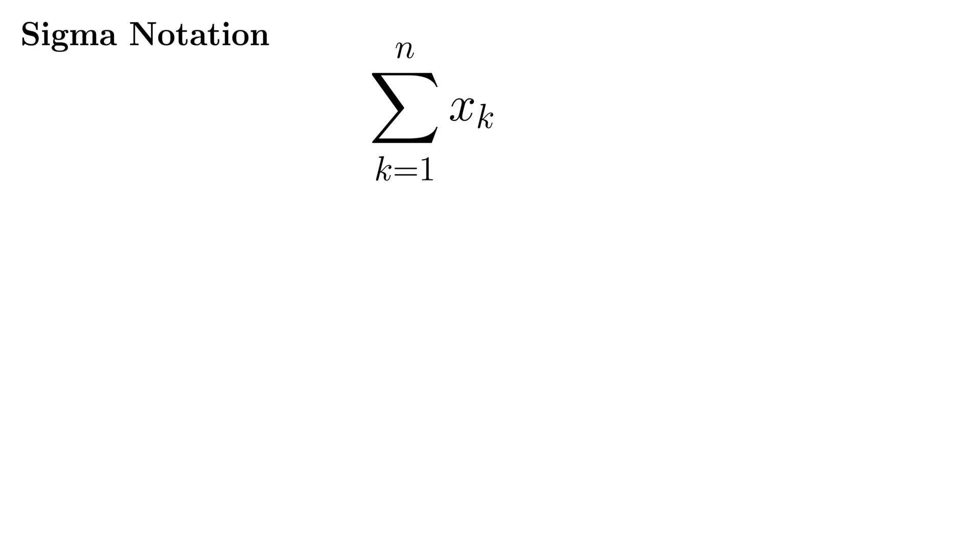When you're adding several terms together, it's often useful to use something called sigma notation. And it's aptly named because here we have the Greek letter sigma. We call it sigma notation, capital sigma for S, for sum.